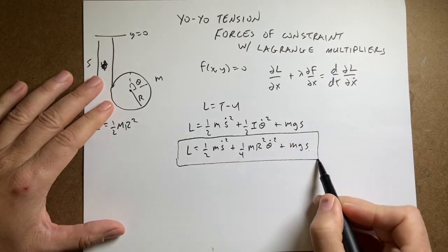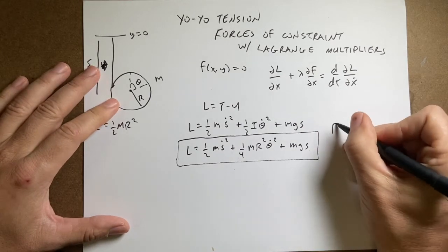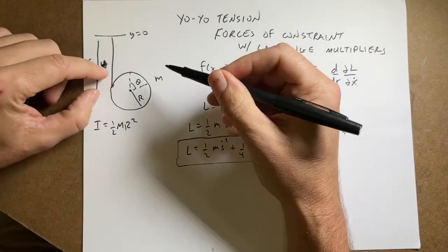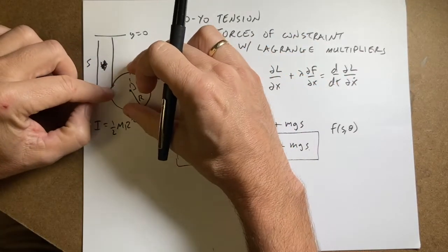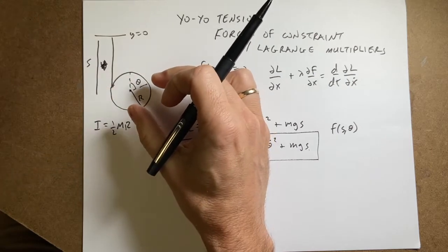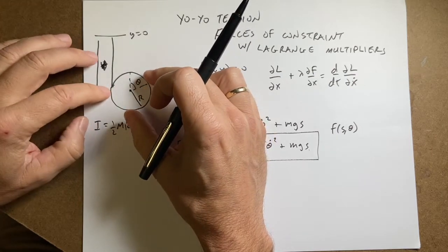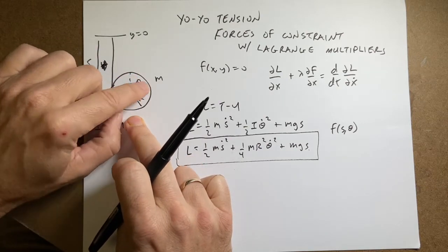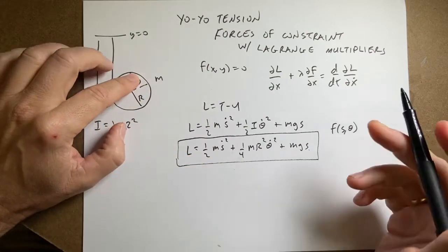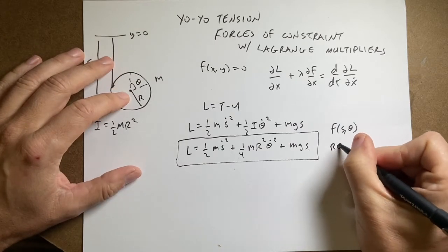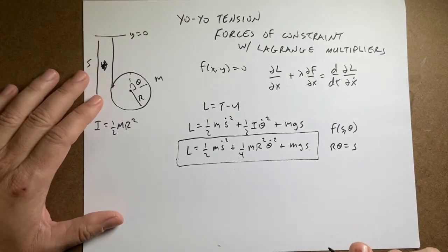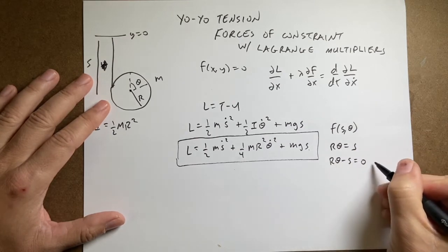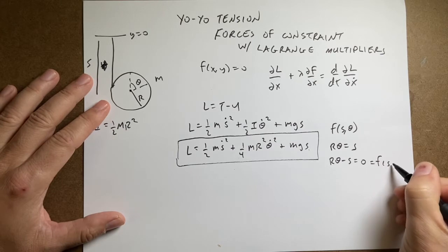Next I need the constraint equation F of S and theta. If the disk turns a little and the string unwinds, the displacement of the center of mass must equal the arc length swept. So r times theta must equal s, which gives the constraint: r·θ − s = 0. That is F of S and theta.